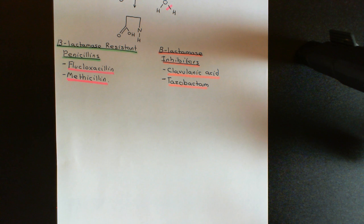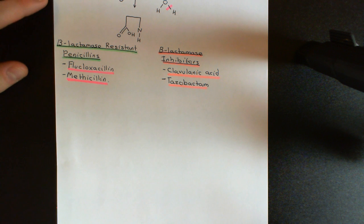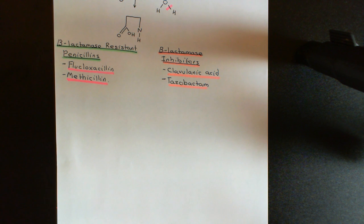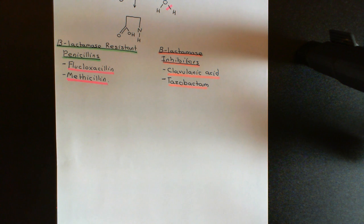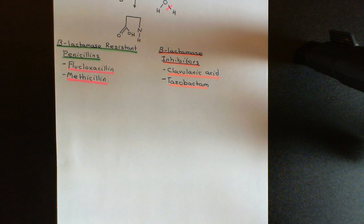We've seen the two original penicillins, which are Penicillin G and Penicillin V, and we've now seen a second class of penicillins, which are the beta-lactamase resistant penicillins. When we use the original penicillins against bacteria again and again, bacterial populations have evolved resistance, and one early mechanism was that these cells would over-express beta-lactamase enzymes, which would break down the penicillin antibiotic and therefore render the antibiotic useless. So what we then developed were penicillin antibiotics with an R group, which meant that these beta-lactamase enzymes couldn't actually break them down.